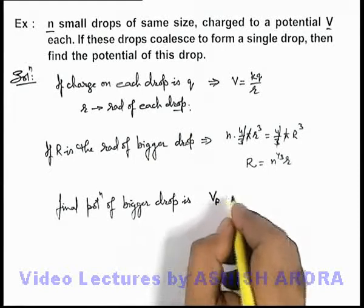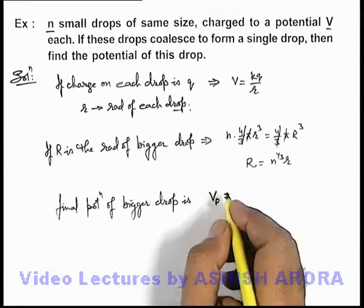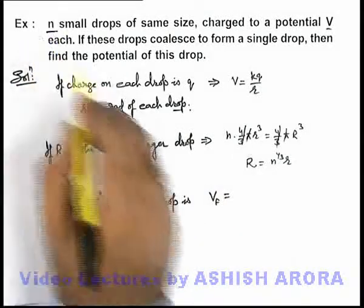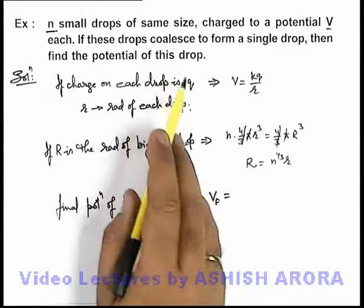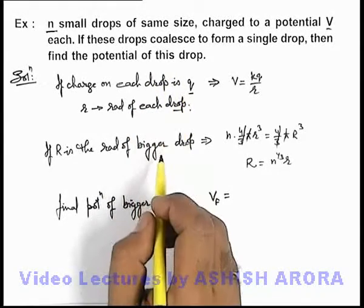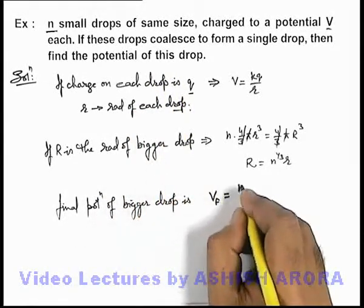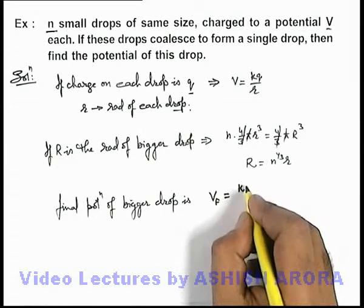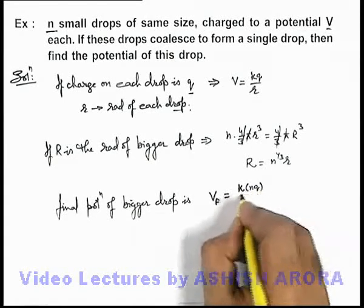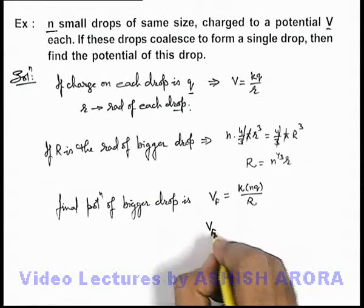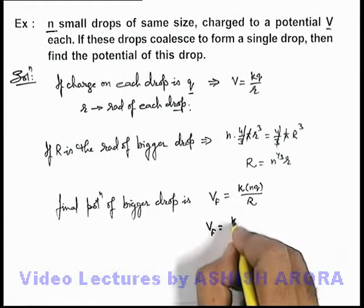The final potential will be due to the total charge, and as n drops are coalesced, the total charge on the bigger drop would be nq. So the result will be k(nq)/R. If we substitute the value, the final potential will be k(nq)/n^(1/3)r.